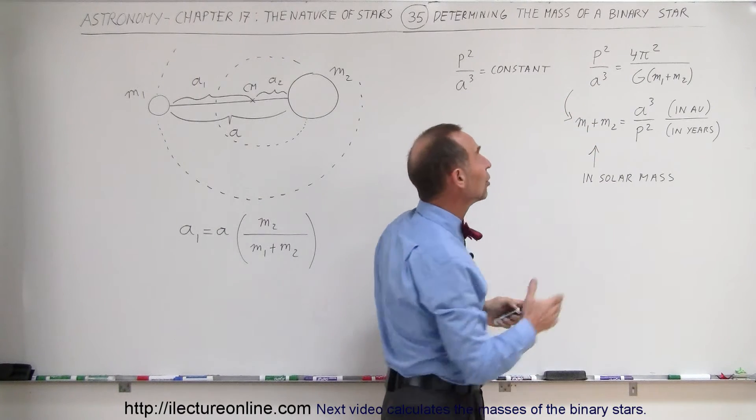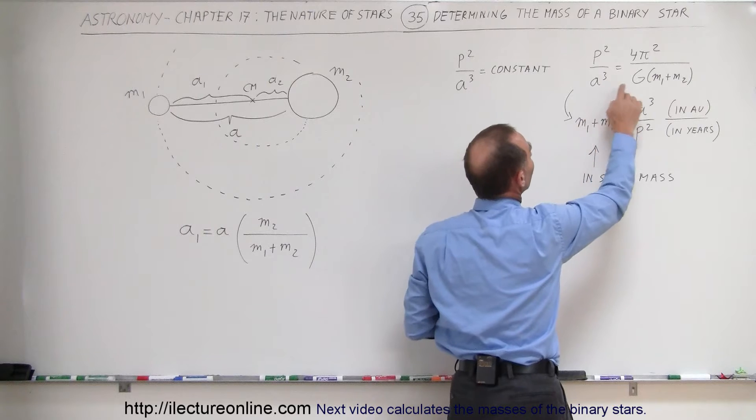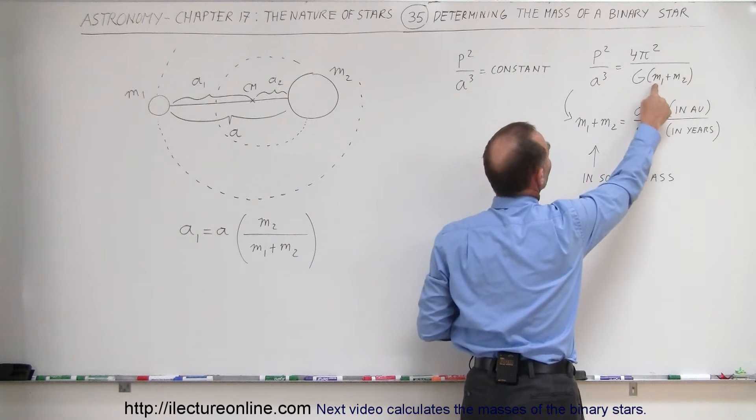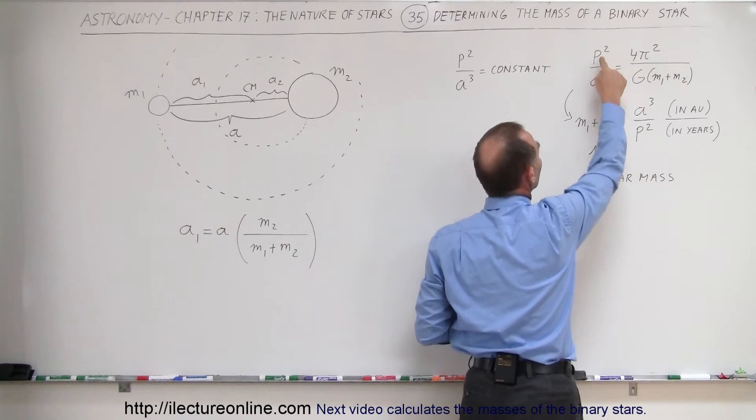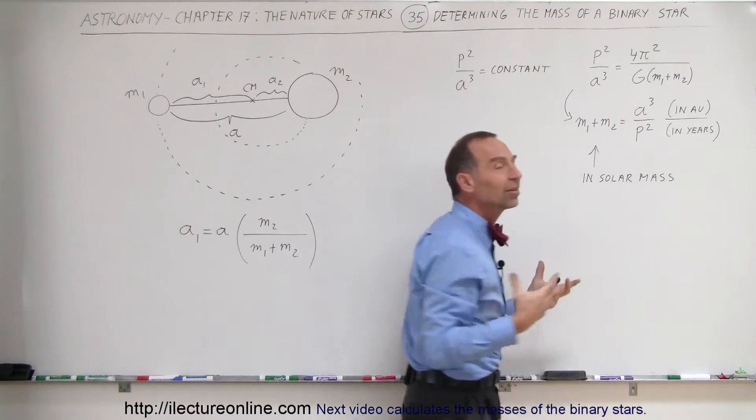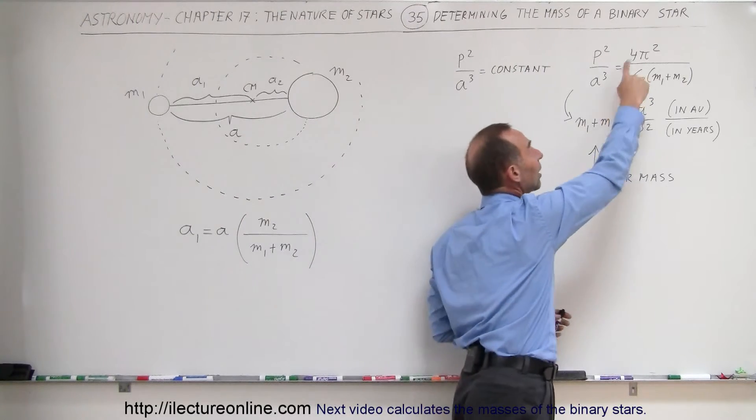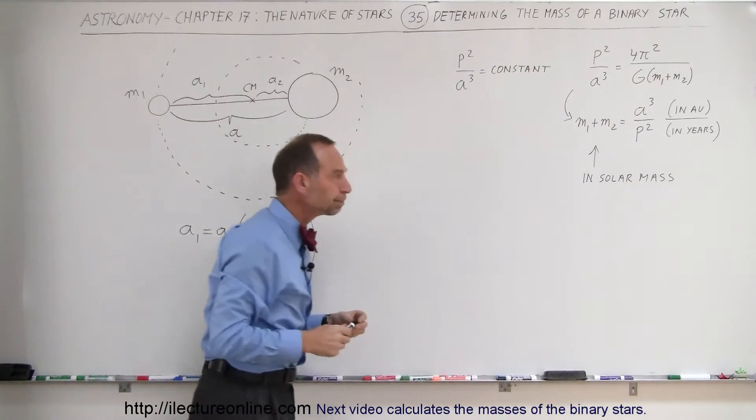If we use the original equation from Newton, then of course we have to put mass in kilograms, period in seconds, and A in meters, and then we'll get the same result. That's why we need these other constants there to make that come out.